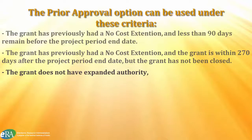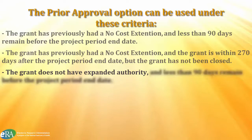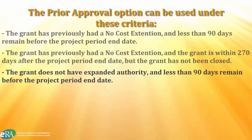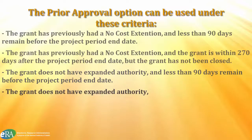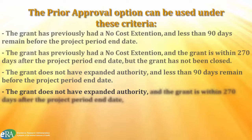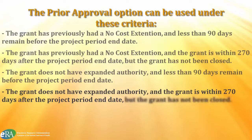The grant does not have an expanded authority and less than 90 days remain before the project period end date, or the grant does not have an expanded authority and the grant is within 270 days after the project period end date has passed, but the grant has not been closed.